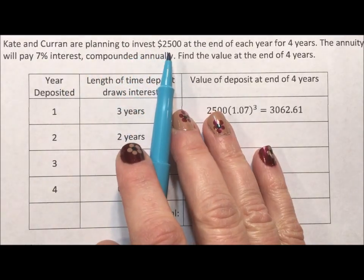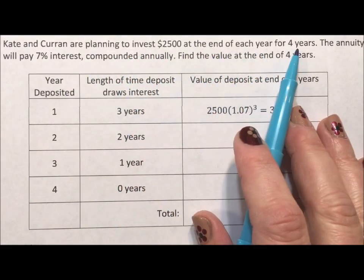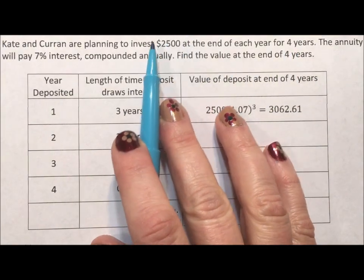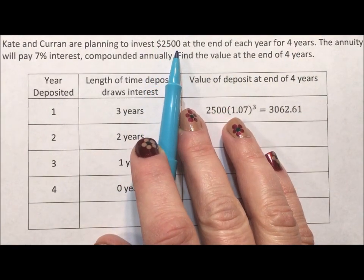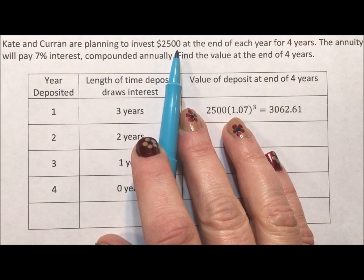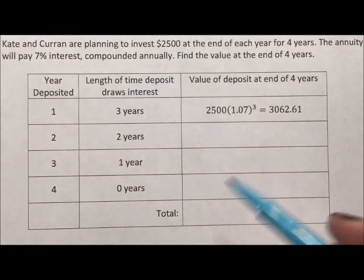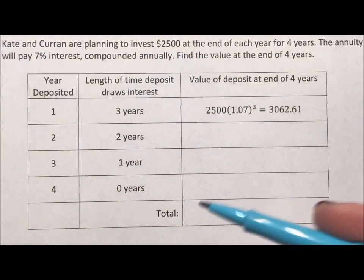So Kate and Kern are planning to invest $2,500 at the end of each year for four years. So this is what an annuity is. You take some amount of money and invest it periodically versus a more common algebra finance equation, which is just compound interest where you have a lump sum. This is stepping away from the lump sum and getting into the idea of doing a periodic payment over and over.